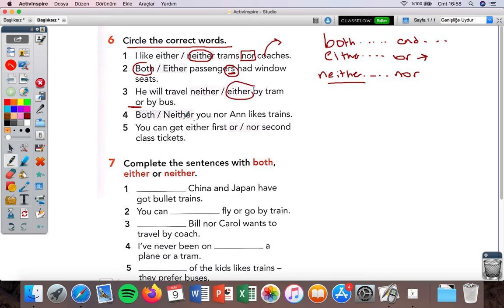He will travel neither or either by tram or by bus. There's 'or', we use 'or' with either, so I choose either. Both or neither you nor Ann likes trains. Can you see 'nor' here? Which one is used with nor? Neither. Neither you nor Ann likes trains - neither you nor Ann like trains, you don't like trains.